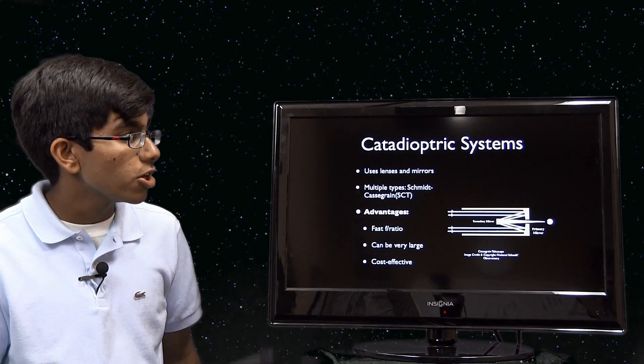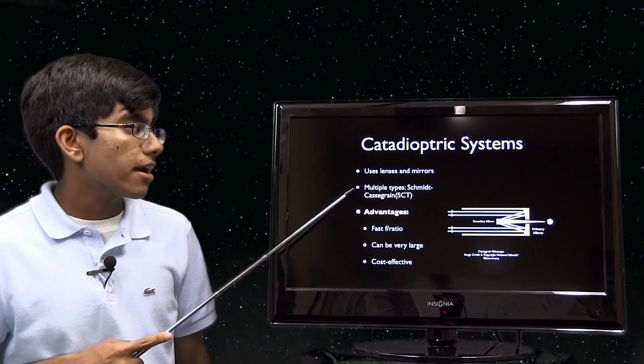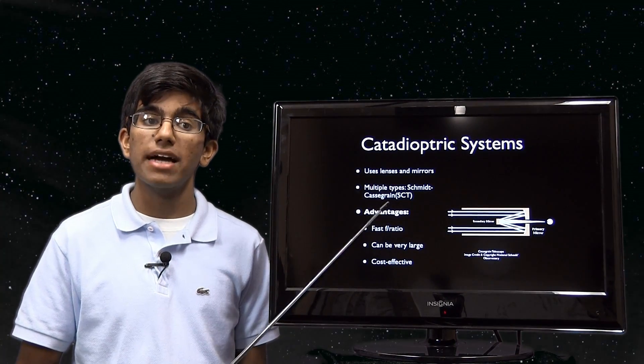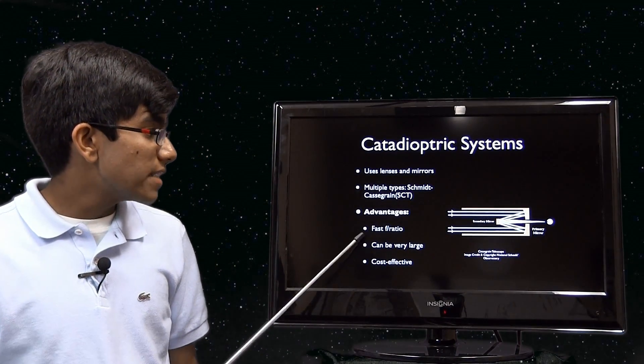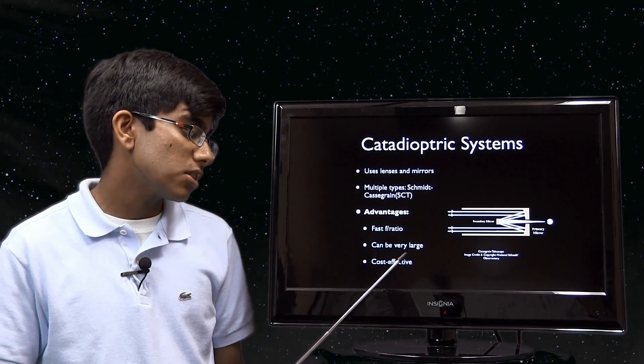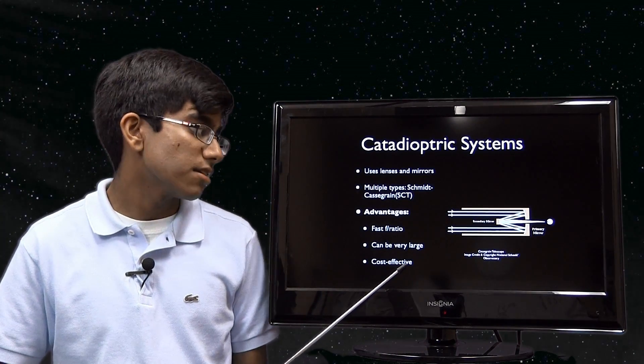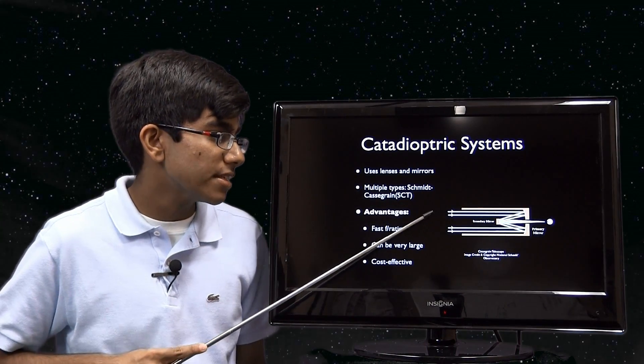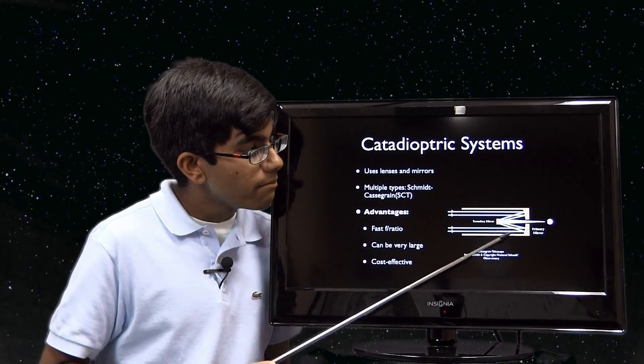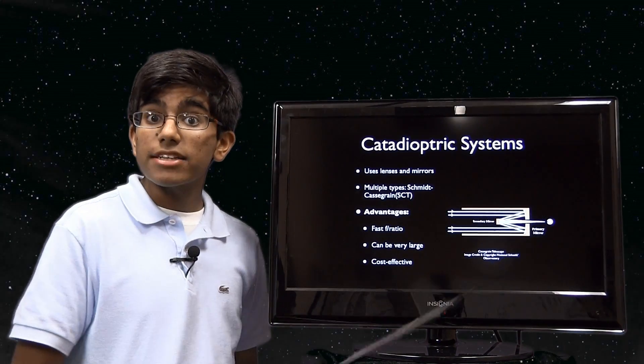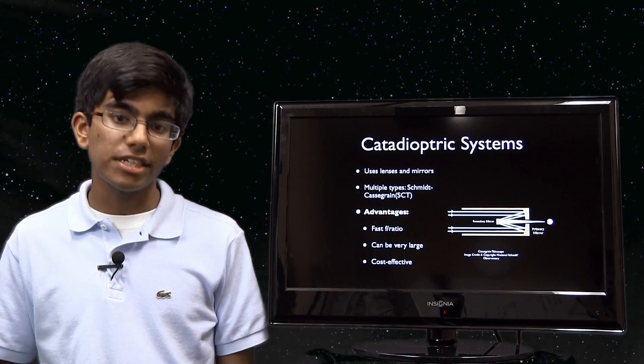Catadioptric systems use both lenses and mirrors. There are multiple types—the Schmidt-Cassegrain is the most common one, and other types include the Maksutov-Cassegrain. Advantages: they have a fast f-ratio, they can become very large, and they are extremely cost effective. You don't have chromatic aberration because you use a mirror here. Light comes down through here, bounces up on this mirror, and goes out through the back to your eye. This is a very popular choice.